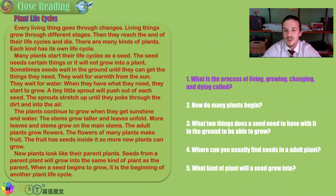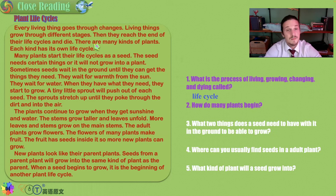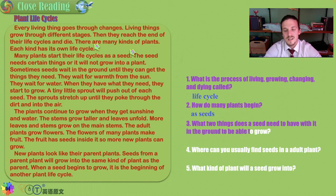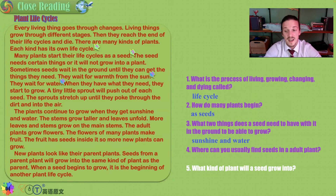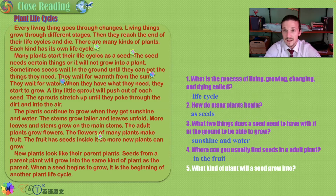What is the process of living, growing, changing, and dying called? It is called a life cycle. How do many plants begin? They begin as a seed. What two things does a seed need to grow? It needs water and sun. Where can you usually find seeds in an adult plant? You can find them in the fruit — open a guava, a mango, a banana. There are little seeds in all the fruits that you eat.